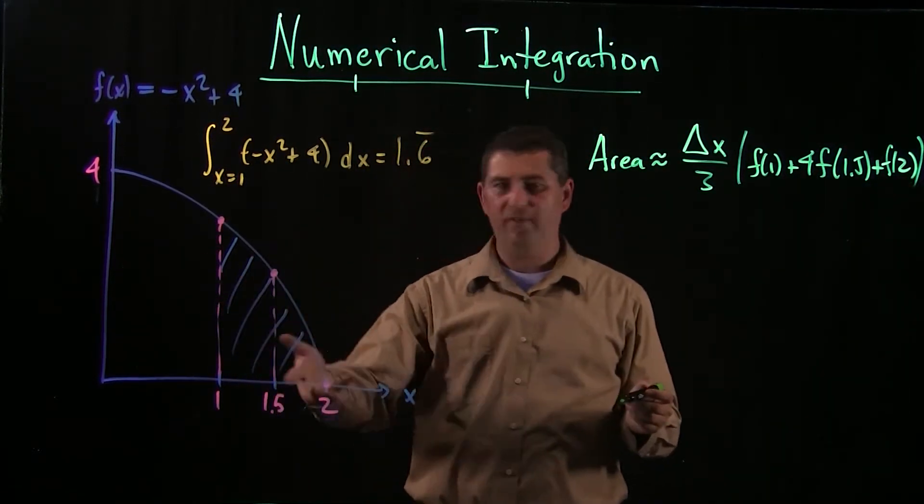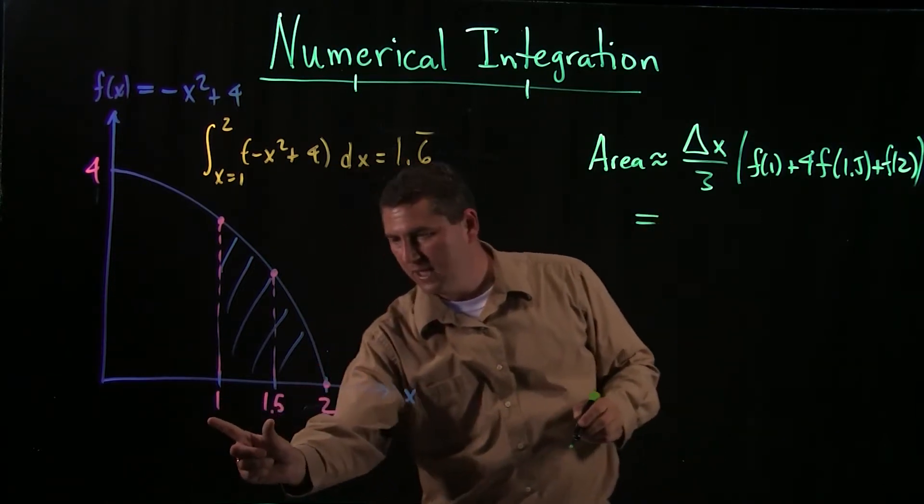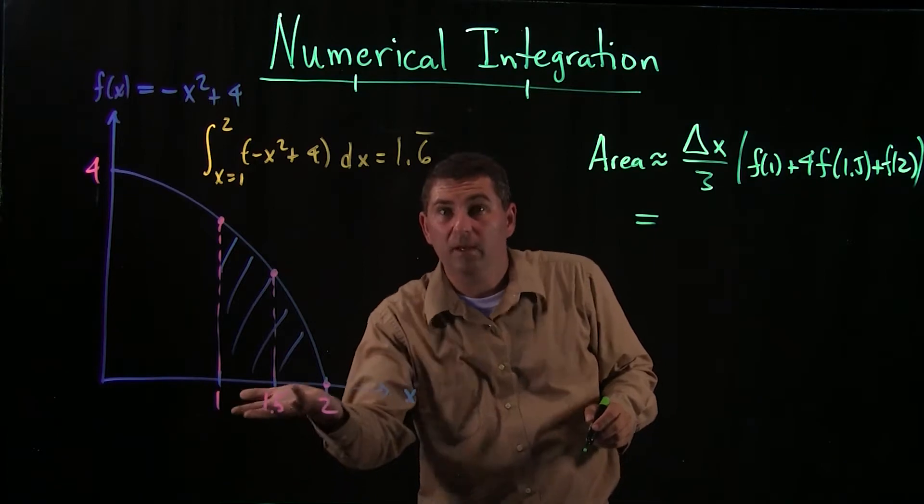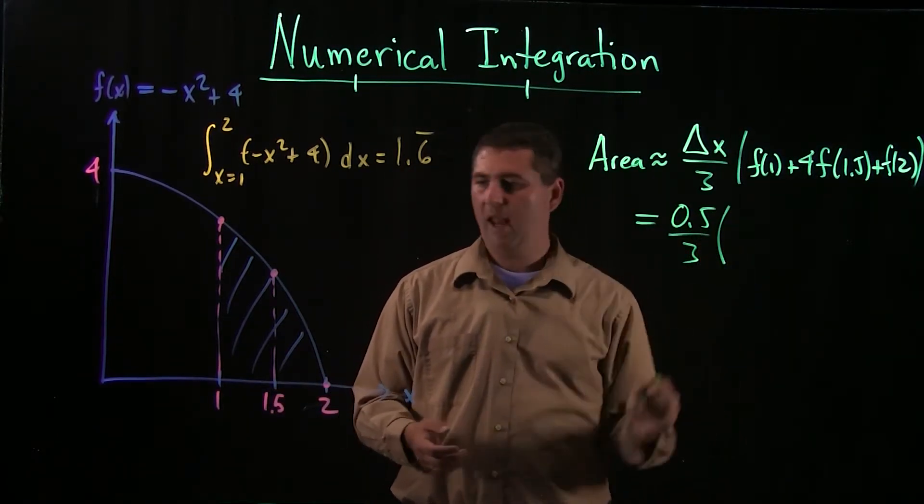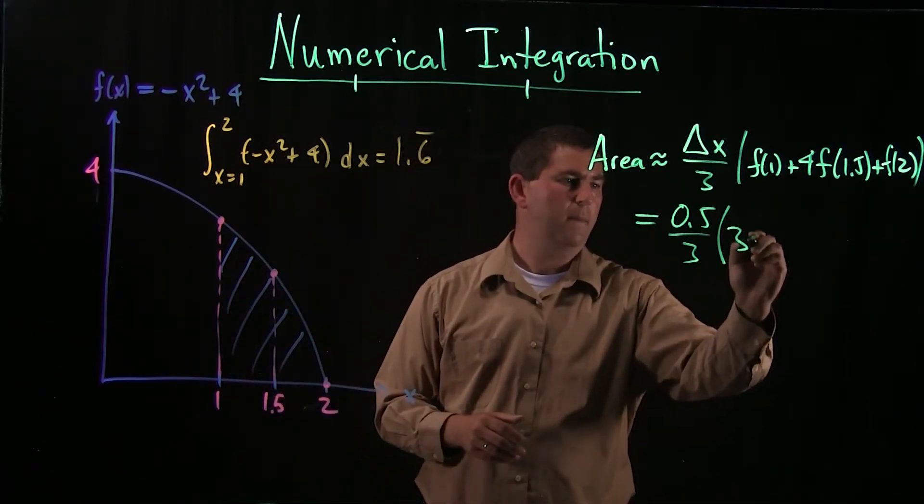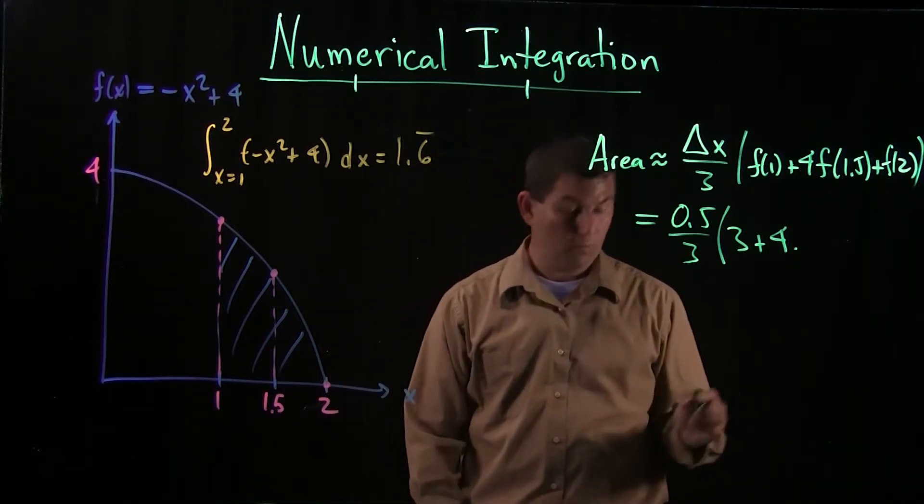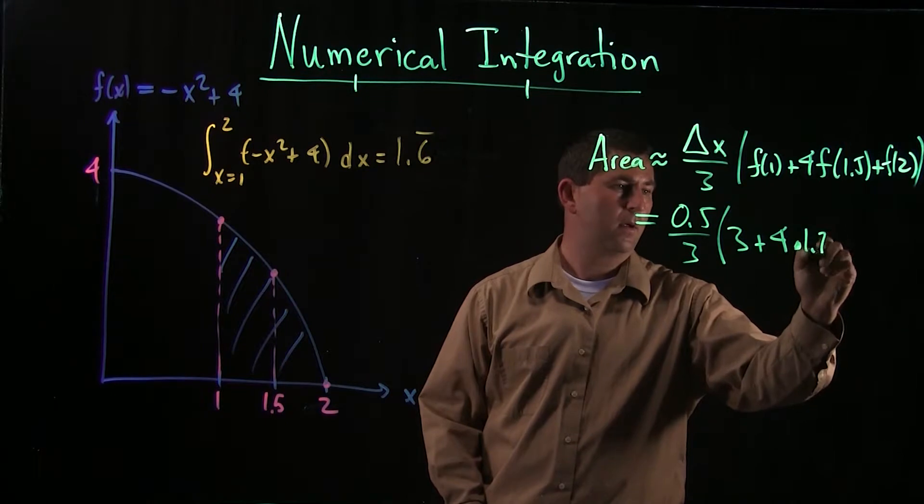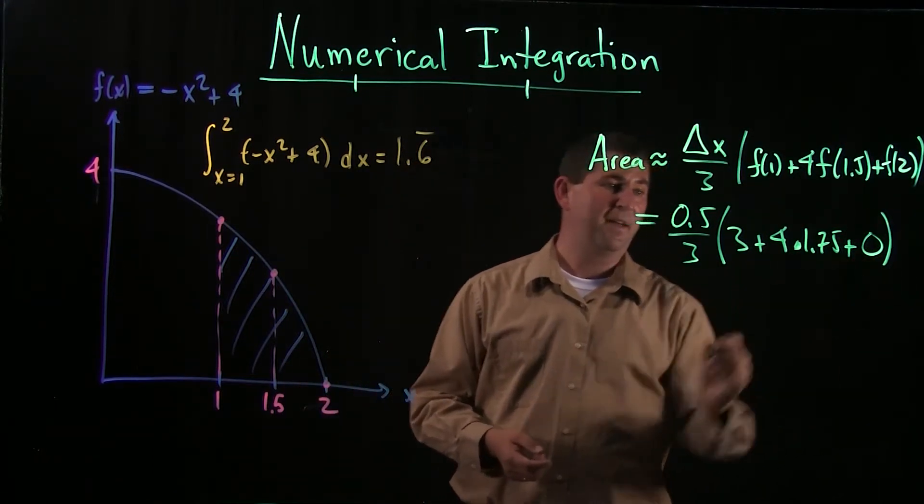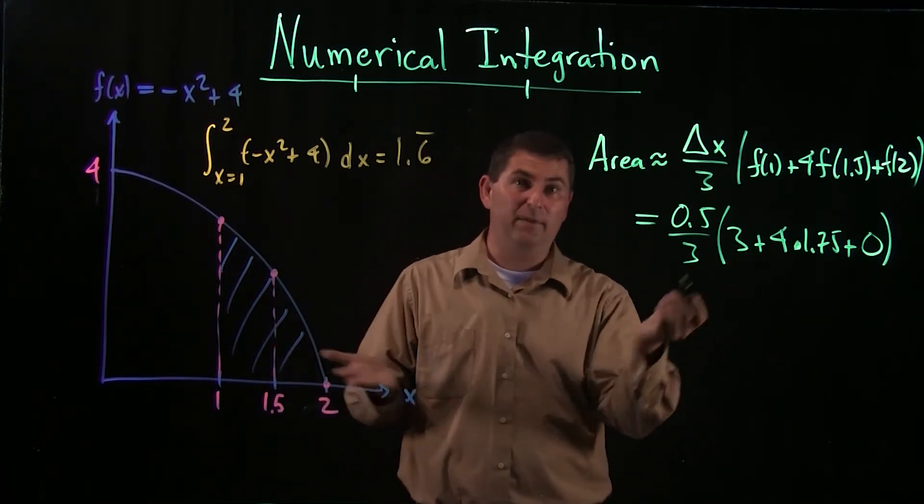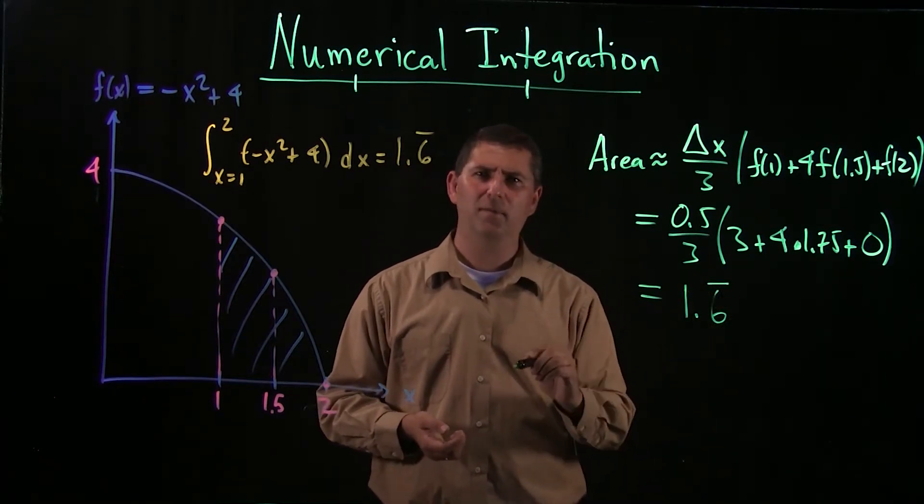Well, we actually computed these in previous video, but let's see again. The delta x, well, that's just this distance. That's 0.5. So 0.5 over 3. And then we need f of 1. This was computed before. It's 3. We need 4 times f of 1.5, which was 1.75. And then we need f of 2. Well, that's the easy one. That's 0. And this is not a terribly difficult arithmetic problem.